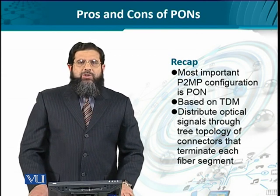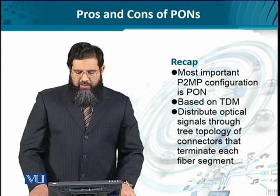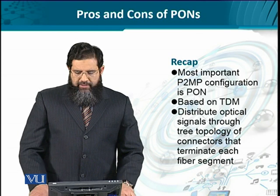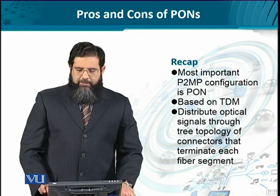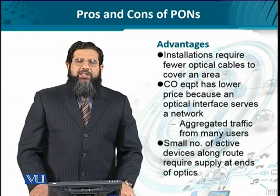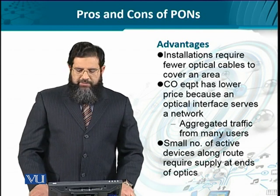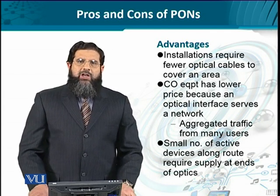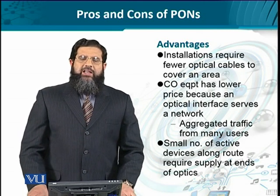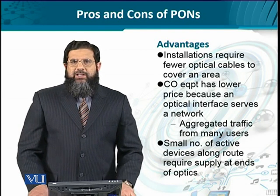Since we are talking about PON, not specifically WDM PON, it is mostly based on TDM. The TDM signals are distributed through optical signals in a tree-like topology — which is what we saw in the passive splitter. Using such a simple mechanism has the inherent advantage that only a few optical fiber cables are deployed in a given geographical area. All the households which are closely placed or adjacent to each other can benefit from one feeder fiber, and then they only need to lay fiber from the passive splitter to their doorsteps.